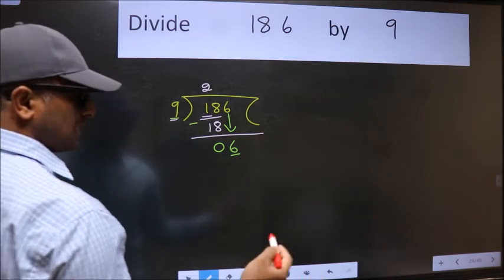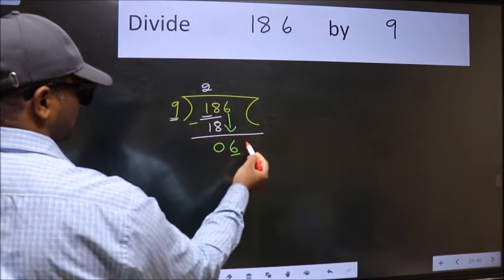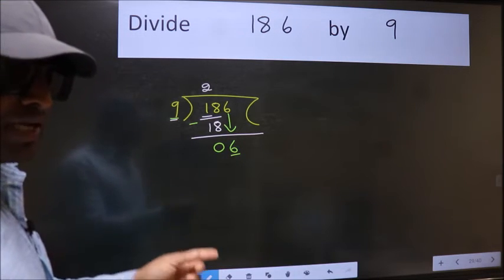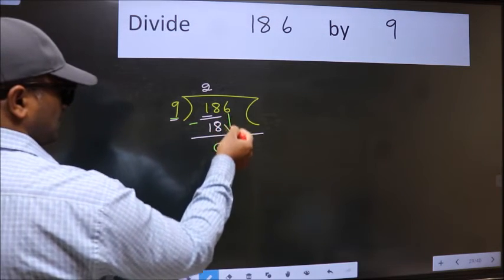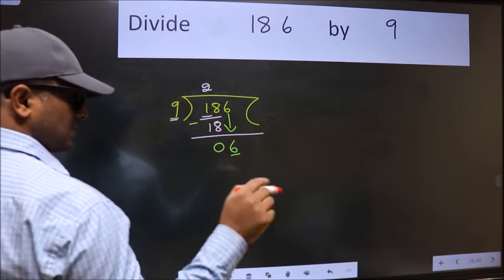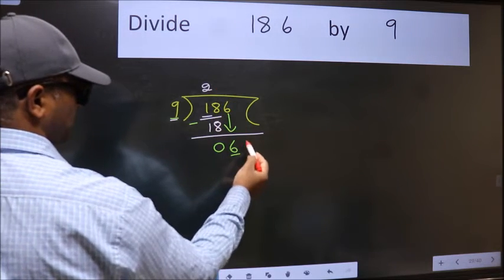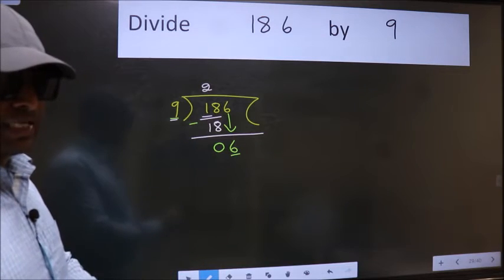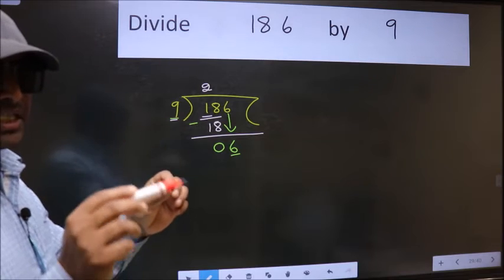So what many do is they directly put dot, take 0, which is wrong. Why is it wrong? Because just now you brought this number down and in the same step, you want to put dot, take 0, which is wrong. I repeat, bring down the number and also put dot, take 0.